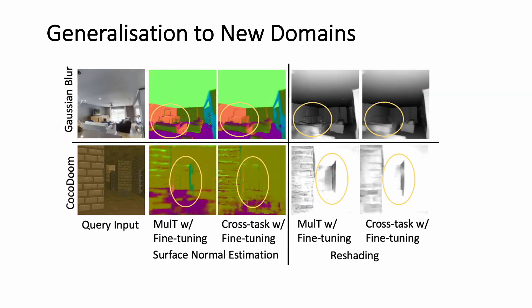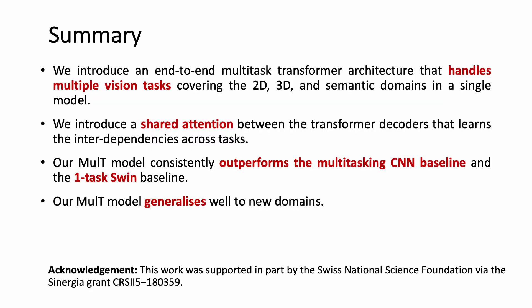Our Multi model generalizes better to new domains than the cross-task CNN baseline. We test the models on two target domains: Gaussian blur applied to the Taskonomy images and the out-of-distribution COCO-DOOM dataset. In both these cases, our Multi model outperforms the cross-task baseline by 4.8 percentage points and 5.2 percentage points on the error metric respectively. In summary, we introduce an end-to-end transformer that handles multiple vision tasks by leveraging a shared attention mechanism to learn the task relations. We show that our model outperforms both the multi-task CNN and the single-task SWIN baselines. Finally, our model generalizes well to new domains. Thank you.